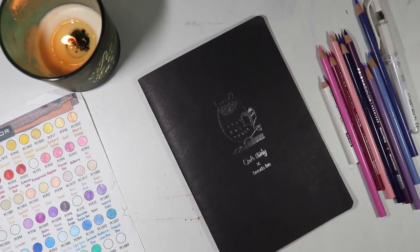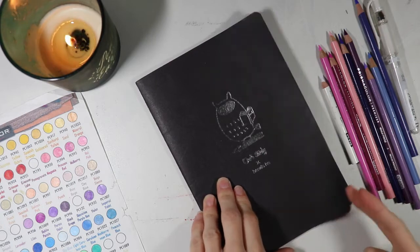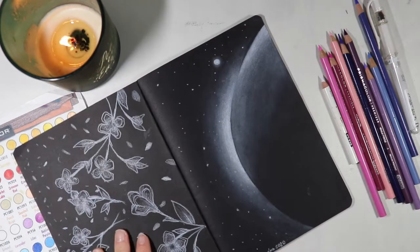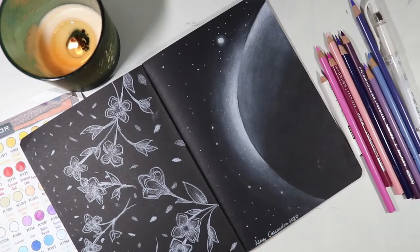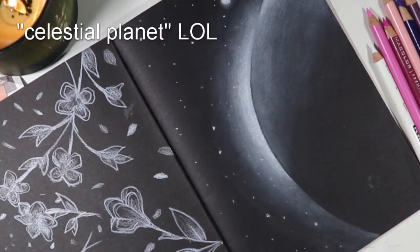I have this cute little black sketchbook my friend Kate got for me and I actually already did a couple of little sketches in it. There are these sort of weird looking flowers with floating leaves around them and then over here I did like a celestial planet.